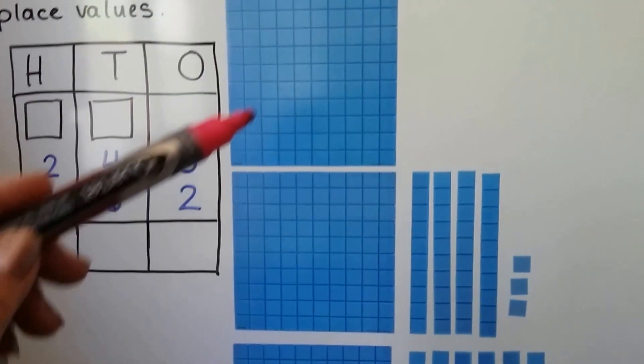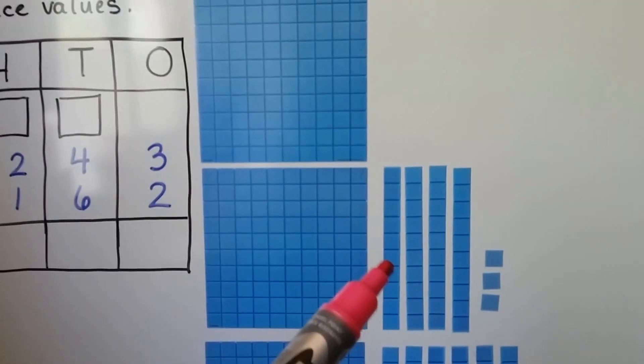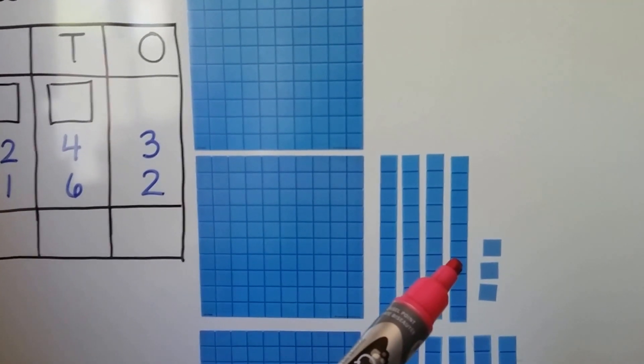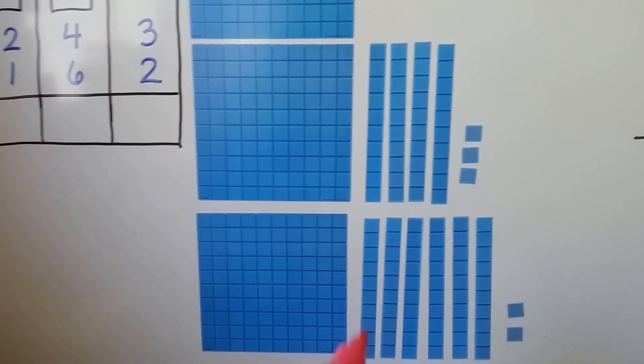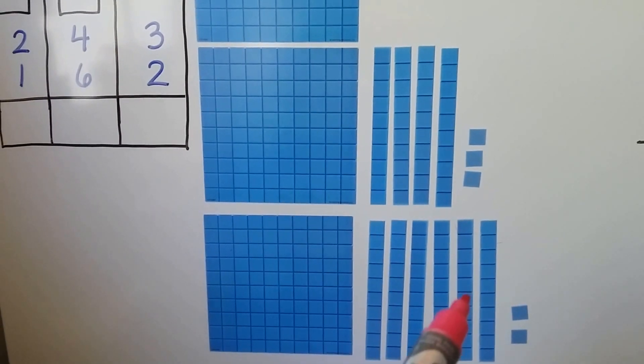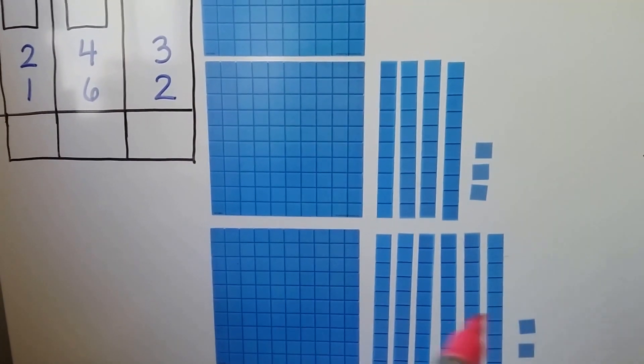So I've got 100, 200, 10, 20, 30, 40, that's 243. We're going to add 100, 10, 20, 30, 40, 50, 60, 2, that's 162.